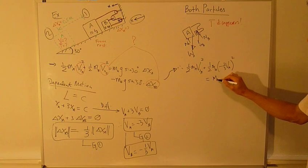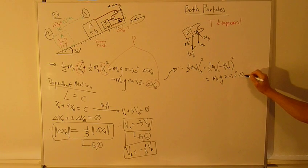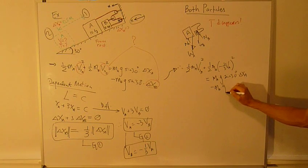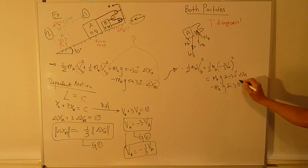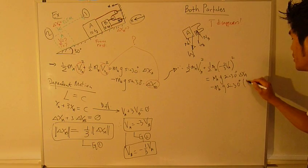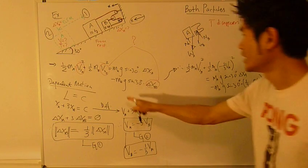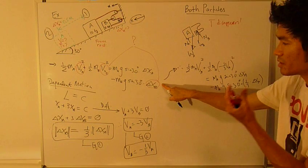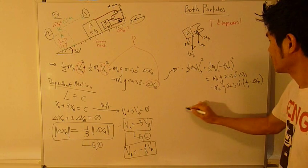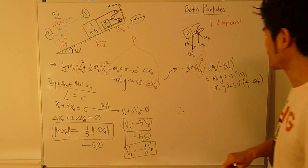Equals, so the rest, VB is negative one-third, so keep it at this. Delta XA, which is given. And minus MB G sine 30, delta XB is one-third of delta XA. Now here, this is just the magnitude, change of distance. So the only unknown left here is this guy. So this is actually V2A.